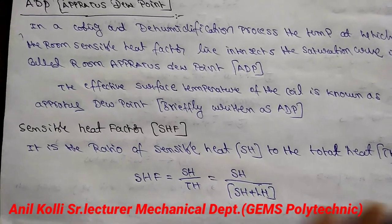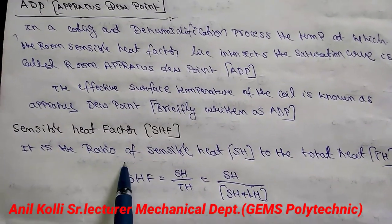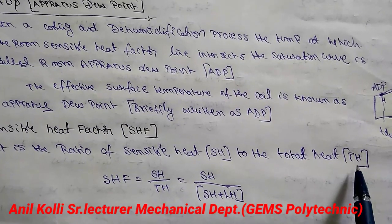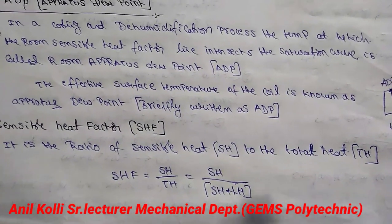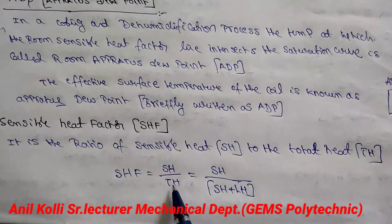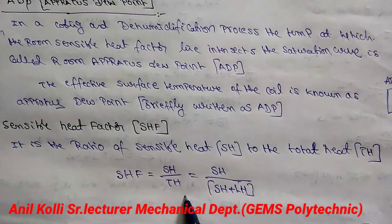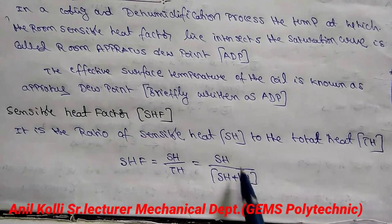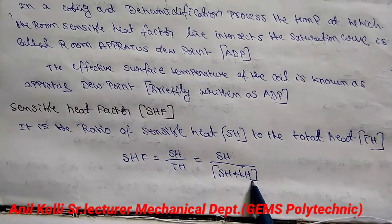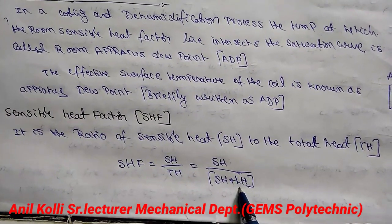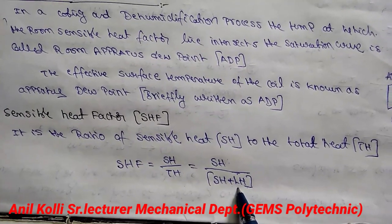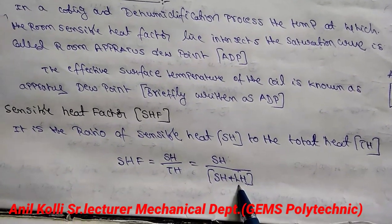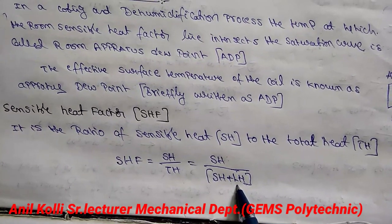Next, what is sensible heat factor? It is the ratio of sensible heat to the total heat: sensible heat divided by total heat. Total heat means sensible heat plus latent heat. Sensible heat means if heat is supplied or rejected — for example, temperature changes from 20 degrees to 30 degrees — that is sensible heat.